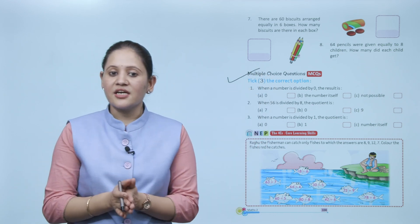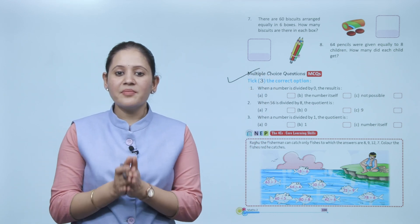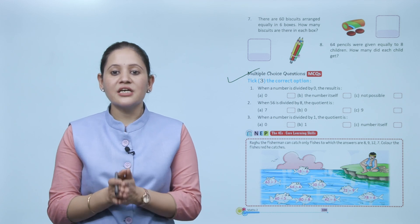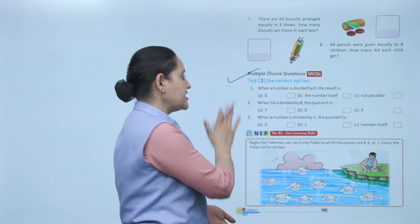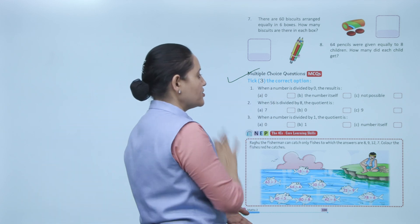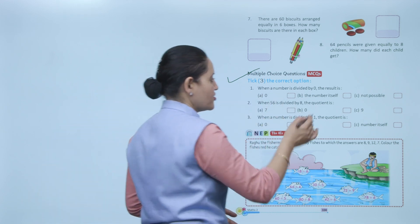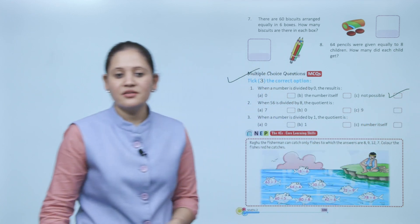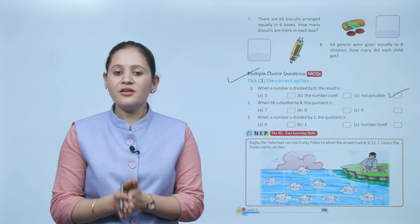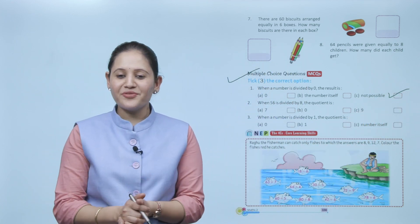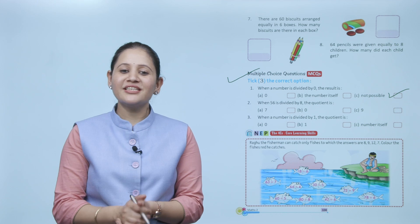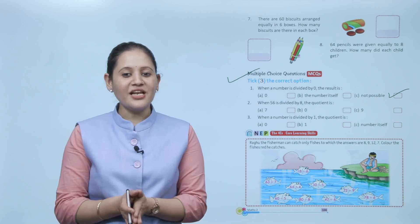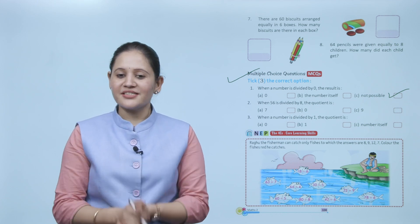Multiple choice question: when a number is divided by 0, the result is not defined — it is not possible. Practice all the questions of this chapter. We end the chapter here; hope you understood it well — now go practice!